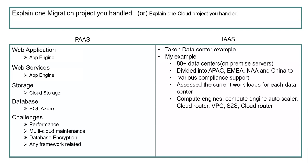It's always good to cover some challenges you faced in the project implementation. For example, on performance — they were launching that application for Canada, the US, and a few European countries. Initially we wanted to maintain only one region in North America, but performance was too low for the EMEA region users. So we thought of expanding and replicating into two regions.